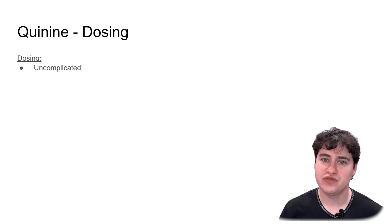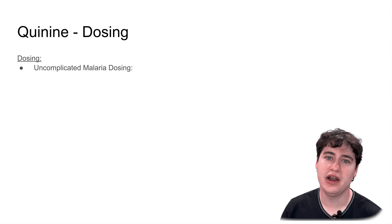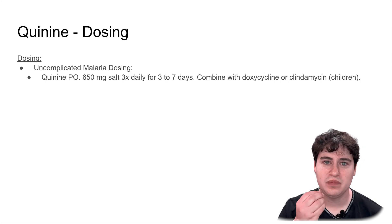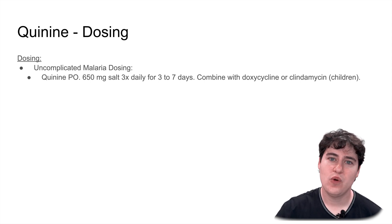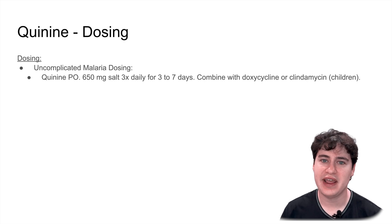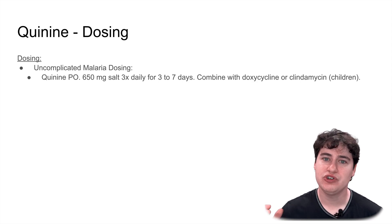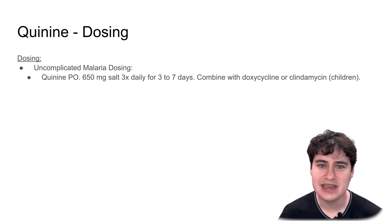Now let's talk about the dosing. Quinine can be used for uncomplicated malaria and severe malaria, but primarily we won't really want to give quinine because there are better drugs with fewer side effects. For uncomplicated malaria, we're going to give 650 milligrams as a pill PO (per oral), three times a day for about three to seven days — the range varies by country recommendations. We never give quinine alone; we always pair it with another antimalarial drug, most likely doxycycline. But if you are a child, we're going to give it with clindamycin instead, because doxycycline deposits in bone, and in children whose bones are still growing, it could cause yellowing of the teeth and other bone abnormalities.